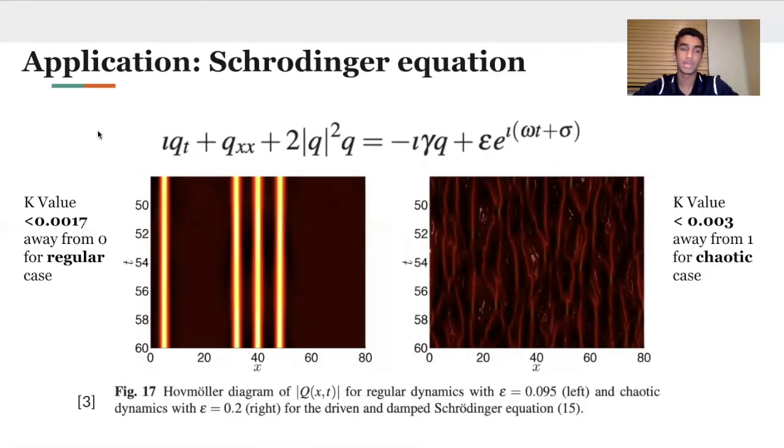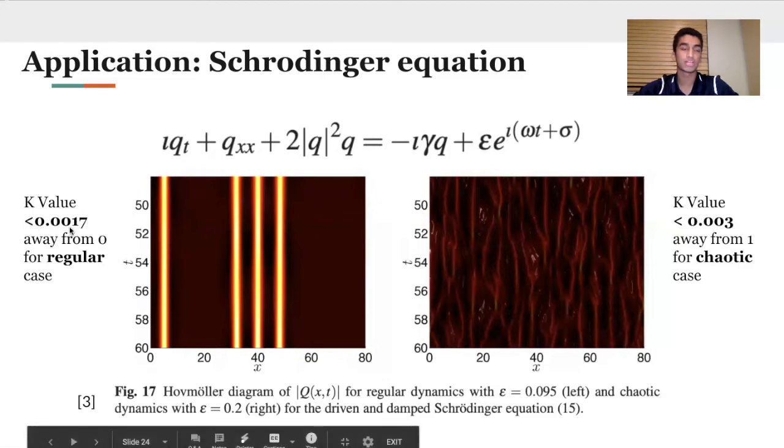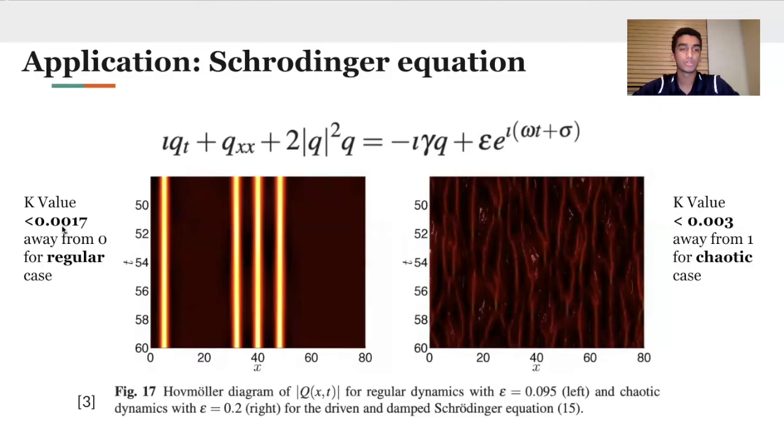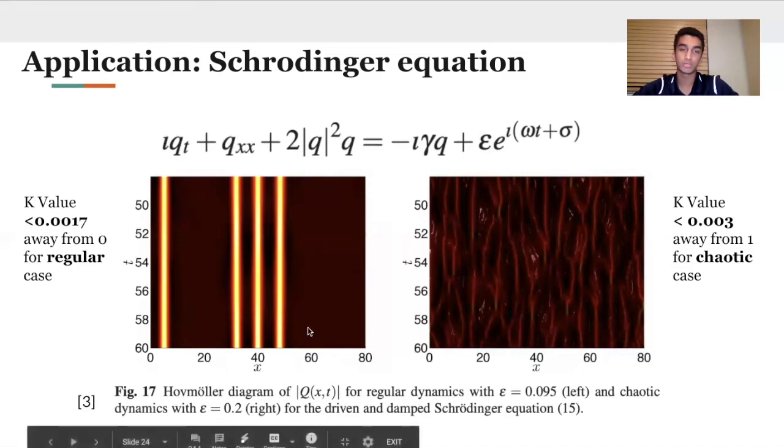This is the Schrodinger equation, used in quantum mechanics. What I want to highlight here is how well our 0-1 test deals with fractional dynamics and higher order partial differential equations. Reconstructing the phase space and calculating a Lyapunov exponent linearizing this data would be very complicated. We'll examine two different cases tuned by this epsilon value to show how distinctive and accurate our test is. This is illustrating regular dynamics for an epsilon value of 0.095. Our k value is about 0.0017 away from 0. So it correctly assesses that this is regular dynamics. For this one, which is clearly chaotic dynamics, we get a k value of less than 0.003 away from 1 for an epsilon value of 0.2. This test dealt very well with partial differential equations.